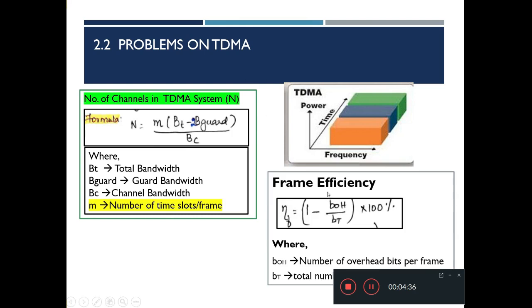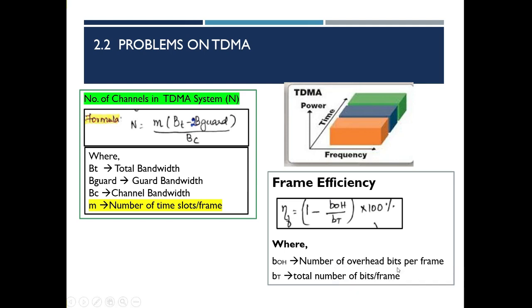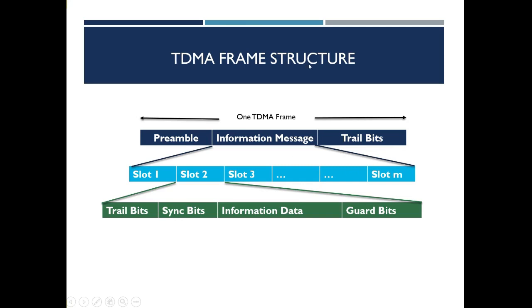Another important formula in TDMA is frame efficiency: η_F = (1 − B_OH / BT) × 100%, where B_OH is the number of overhead bits per frame and BT is the total number of bits per frame. A TDMA frame consists of preamble, information message, and trail bits. Each frame has M time slots, and each slot contains trail bits, sync bits, information data, and guard bits.